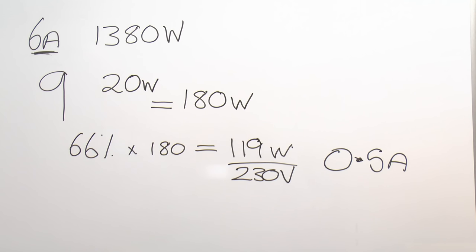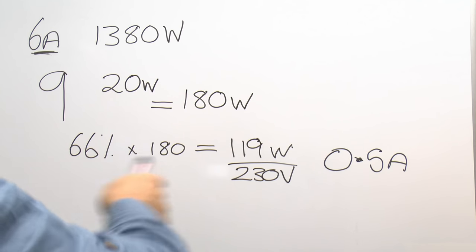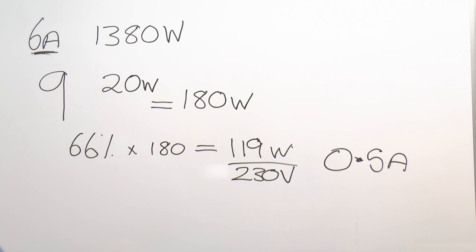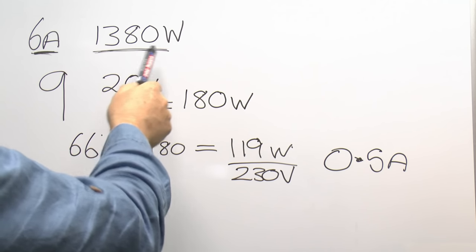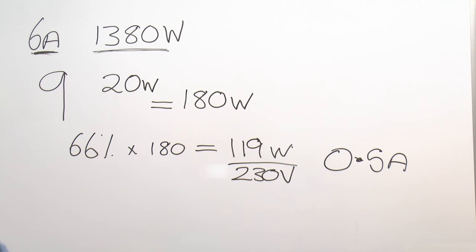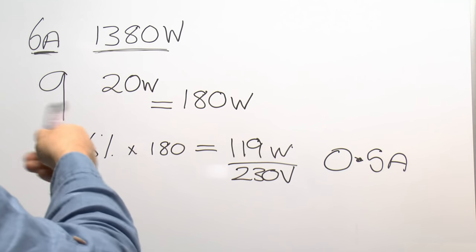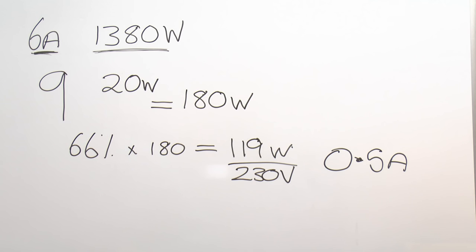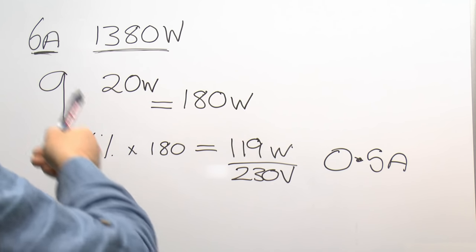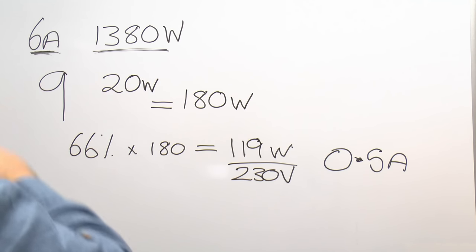This is just one example with a single pendant per room. Many properties have downlighters — the same principle applies: add up the fittings, estimate the load per fitting, total it, and take 66%. Halogen downlighters at 50W each — ten in a room — give 500W, which could approach the circuit limit. But LED equivalents at around 5W each mean ten in a room is only 50W. The answer is always going to be considerably less than the 1,380W or 6A you started with.